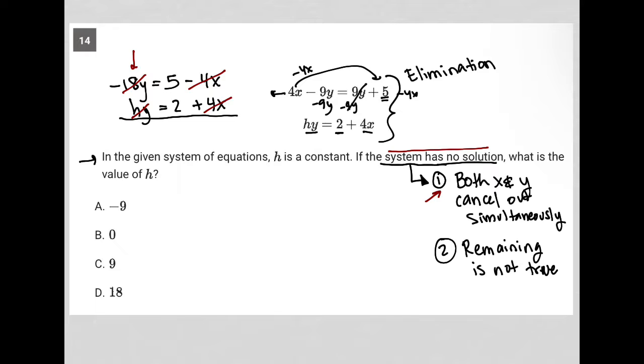How would a negative 18y and an hy cancel out? The only way that that could possibly happen is if h is equal to positive 18. That would be the only way that that could happen.